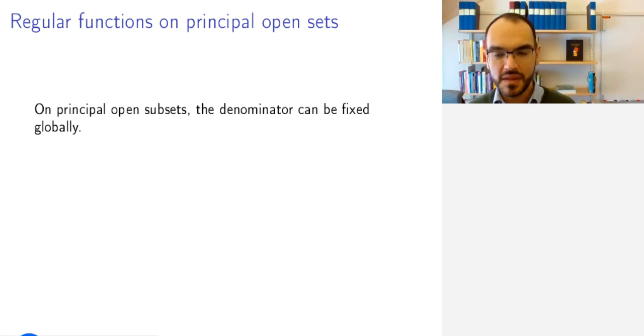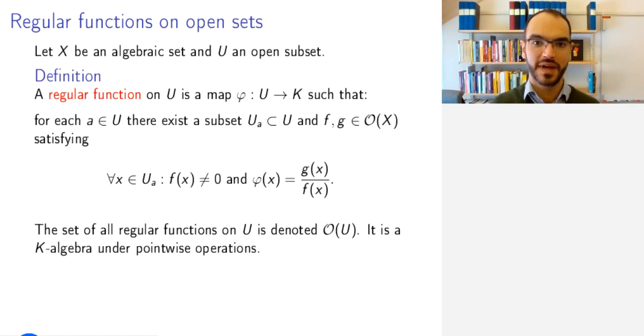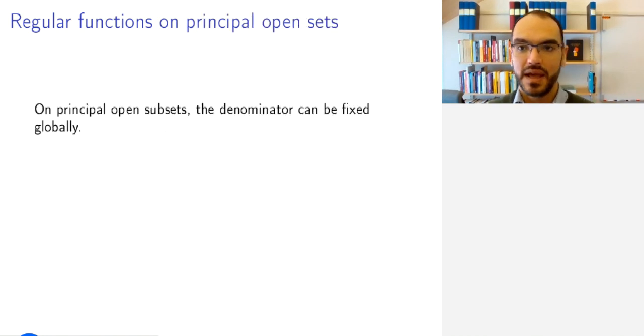Now, this is good because it's local, but it's cumbersome because the polynomial, if we go back, the polynomial F varies with the point A, so these F and G, they depend on U_A. And that is where one of the advantages of these principal open subsets comes in, because then you can fix the denominator globally.